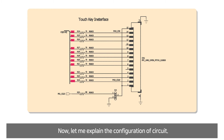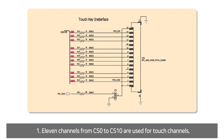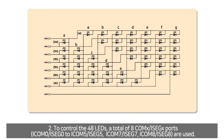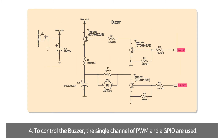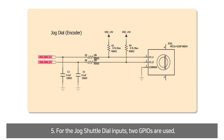Let me explain the configuration of the circuit. 11 channels from CS0 to CS10 are used for touch channels. To control the 48 LEDs, a total of 8 COM and SAC ports are used. To control the 15 high-luminance LEDs, a total of 10 GPIO are used. To control the buzzer, a single channel of PWM and GPIO are used. For the jog shuttle dial input, two GPIO are used.